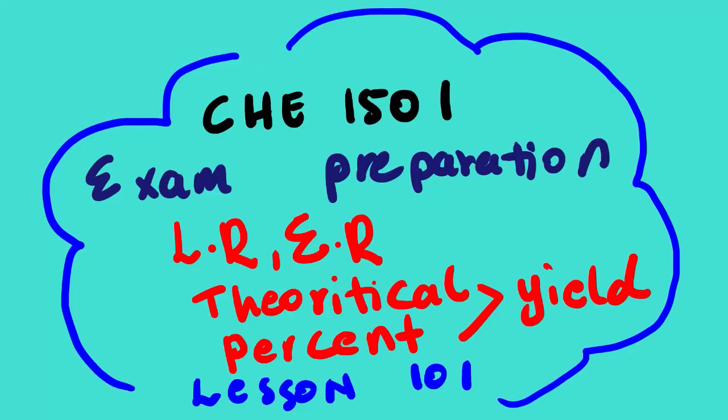Today's lesson for Chemistry 1501 continues with examination preparation. The topic is stoichiometry calculations, focusing on limiting reagent, excess reagent, theoretical yield, and percentage yield. This is lesson 101. We will be looking at how to calculate those concepts using their equations.